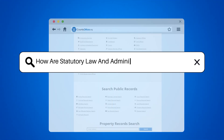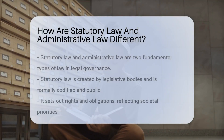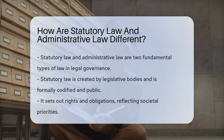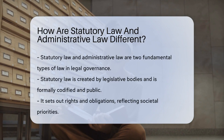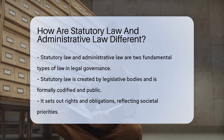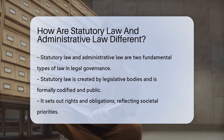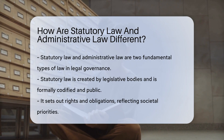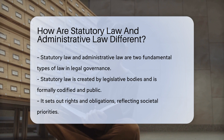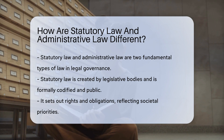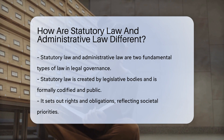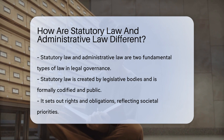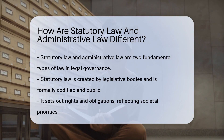How are statutory law and administrative law different? Statutory law and administrative law are two pillars that support the structure of legal governance, each with its distinct characteristics and functions. Understanding the difference between these two types of law is crucial for grasping how legal systems operate.